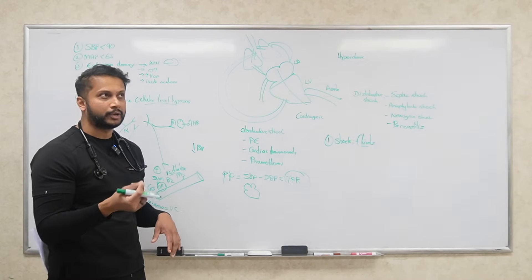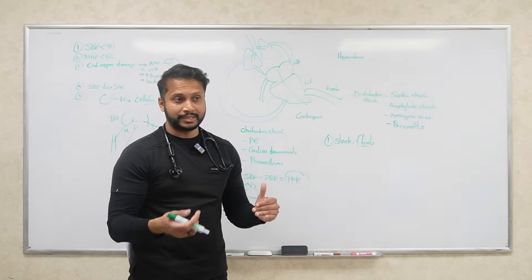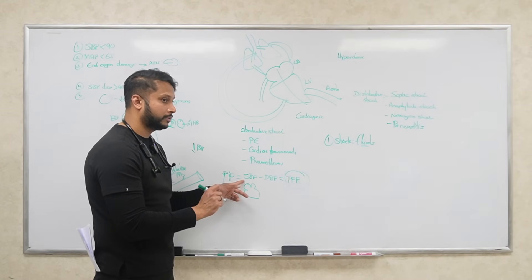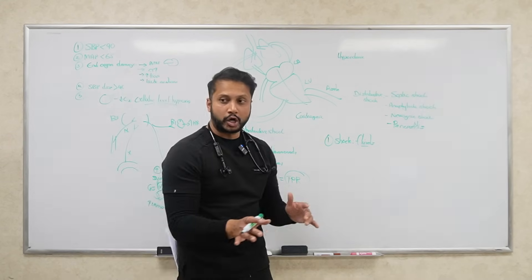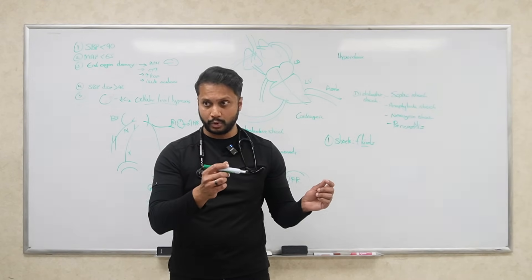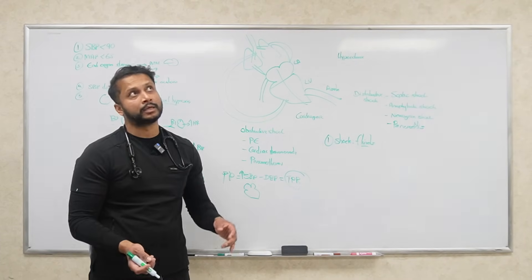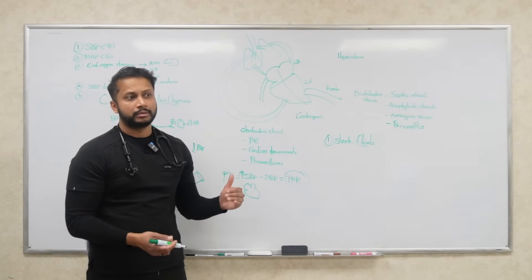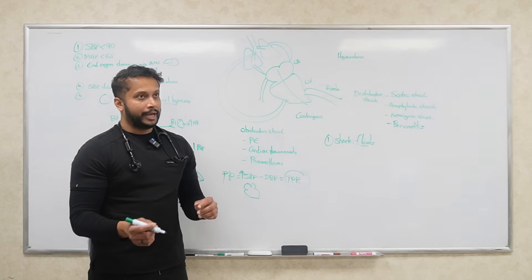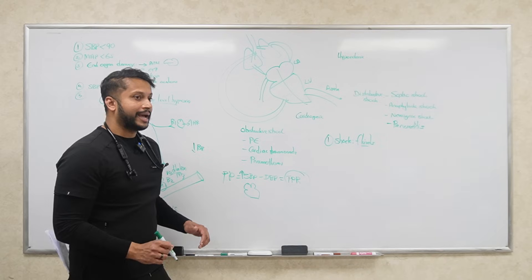If someone is hypotensive, sympathetic stimulation increases cardiac contractility, raising cardiac output and therefore systolic blood pressure. Simultaneously, the RAAS system is activated, aldosterone reabsorbs sodium and water to increase preload, further boosting systolic blood pressure. Diastolic blood pressure should also rise due to increased peripheral resistance.